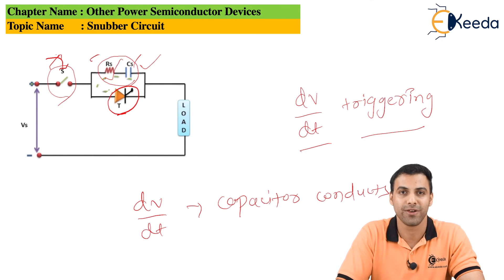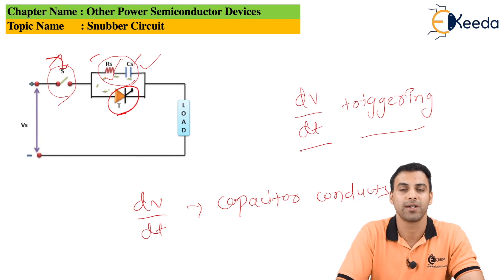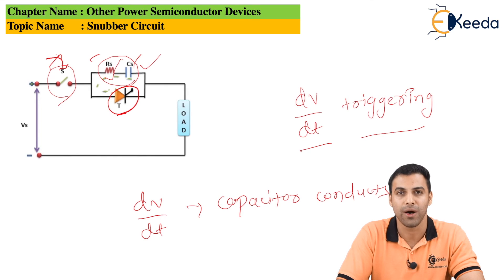If we want to protect our circuit from di/dt, we can use an inductor, because an inductor suppresses sudden changes in electric current, just like a capacitor does not allow a sudden change in electric voltage.